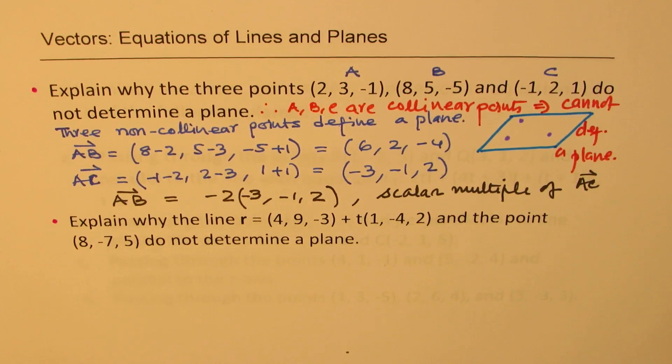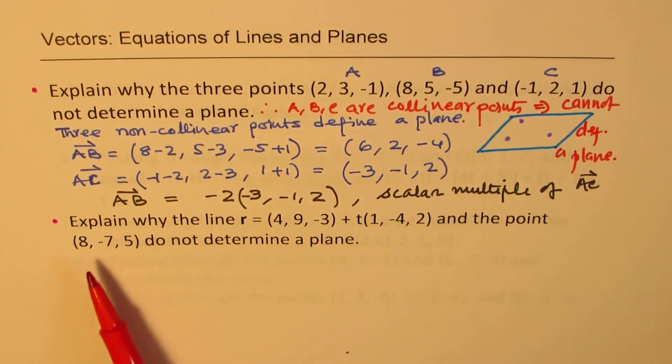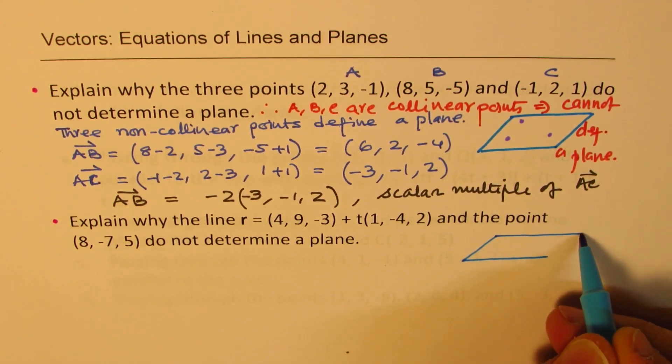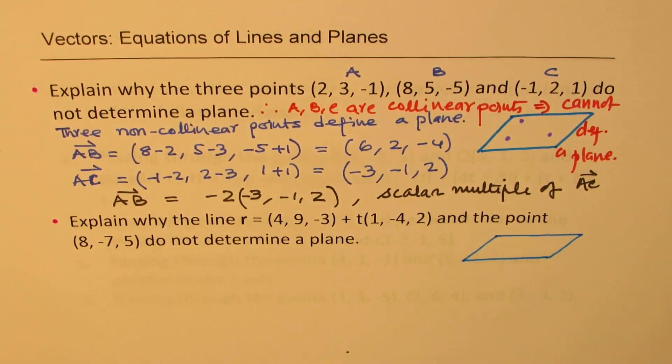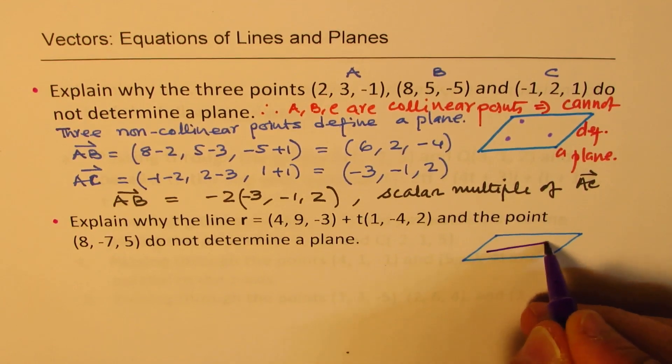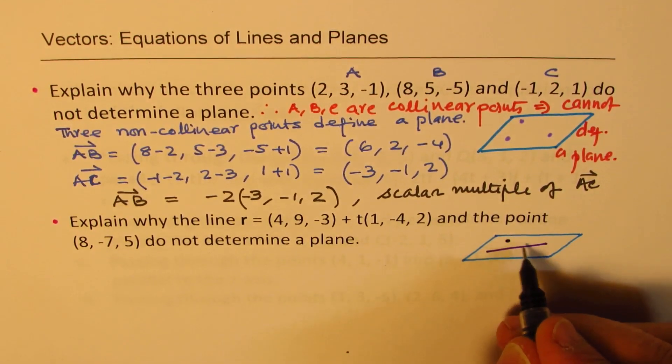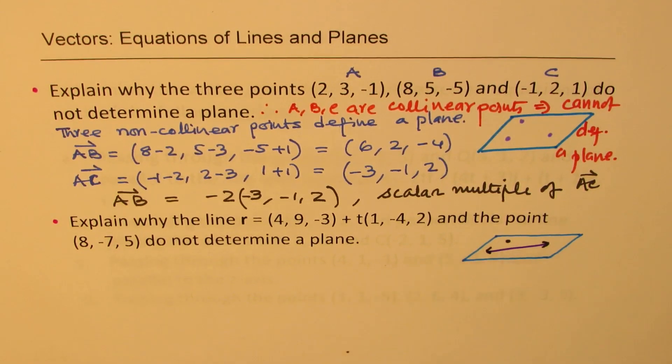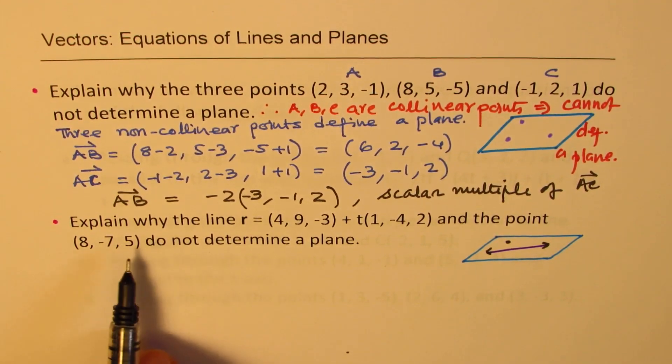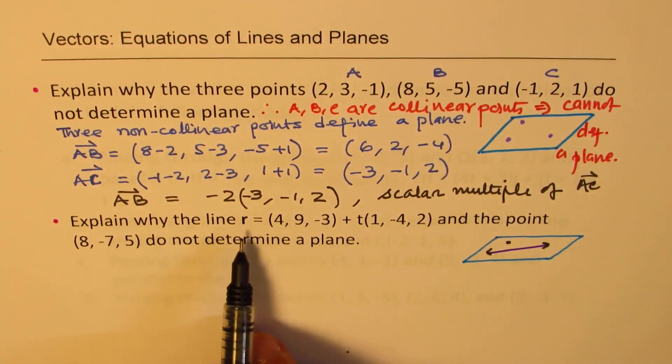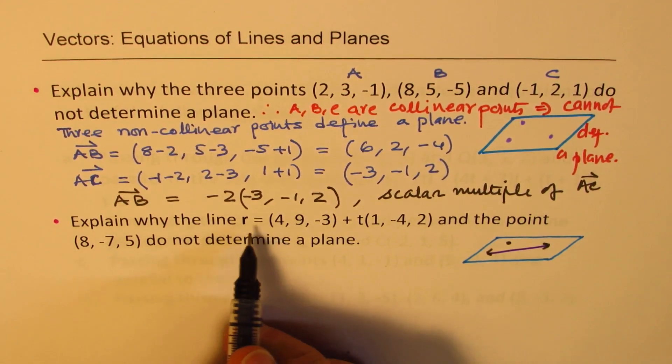Now let's look into the second part. Explain why this line and this point do not determine a plane. Now, when we are looking for a point and a line, then we know that the point should be separate. Point should be somewhere away from the line. So point is not on the line. So if we prove that, then it is fine.